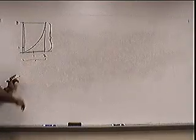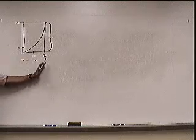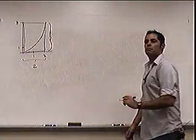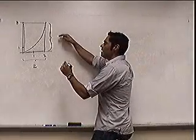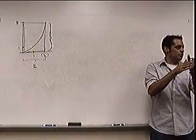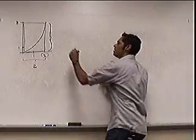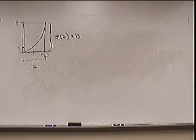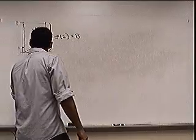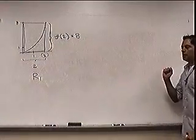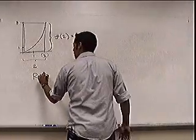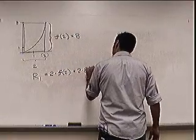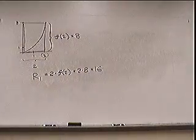So, how wide is this rectangle? Two. This distance right here is two. And how high is it? Eight — you're getting eight by taking two and plugging it into the function. So I'm going to call it f(2) instead, which is 8. I have one rectangle in this problem — R1 — which is width times height: 2 × f(2) = 2 × 8 = 16. And we know that estimate is terrible.